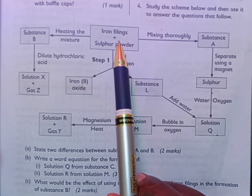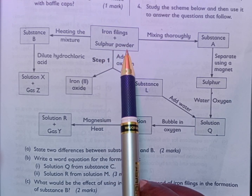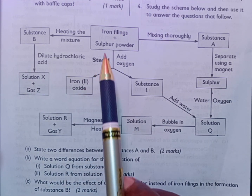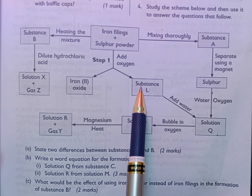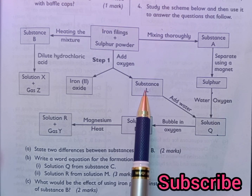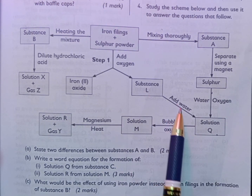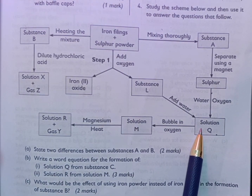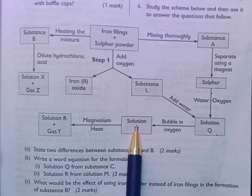We also have iron filings plus sulfur powder going through step one where oxygen is added. Iron will react with oxygen to form iron(II) oxide. Sulfur will react with oxygen to form sulfur dioxide, also known as sulfurous acid when dissolved. That sulfurous acid will then be reacted with oxygen to form sulfuric acid.